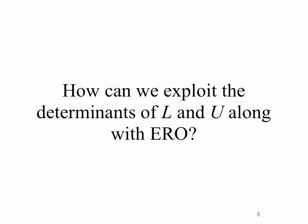How can we exploit the determinants of lower and upper triangular matrices and combine that with our elementary row operations from the previous video? This might lead us to a process for finding the determinant of any n-by-n matrix, by combining the fact that lower, upper, and diagonal matrices have determinants equal to the product of their diagonal entries, with how row swaps, row scaling, and row addition change the determinant.